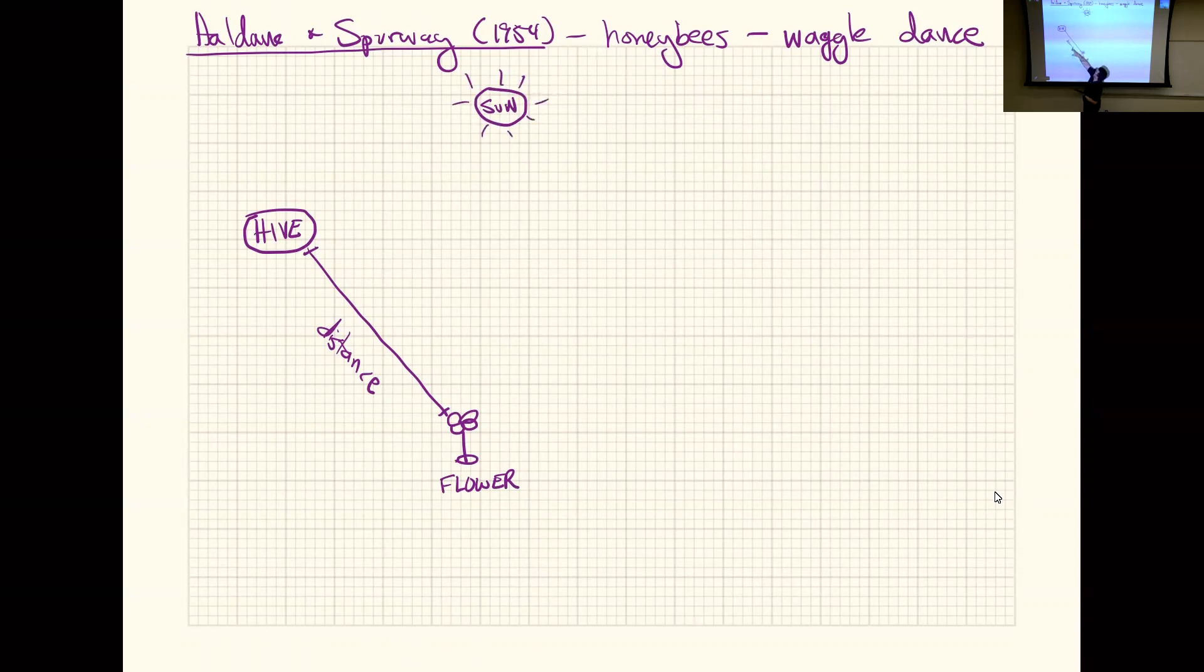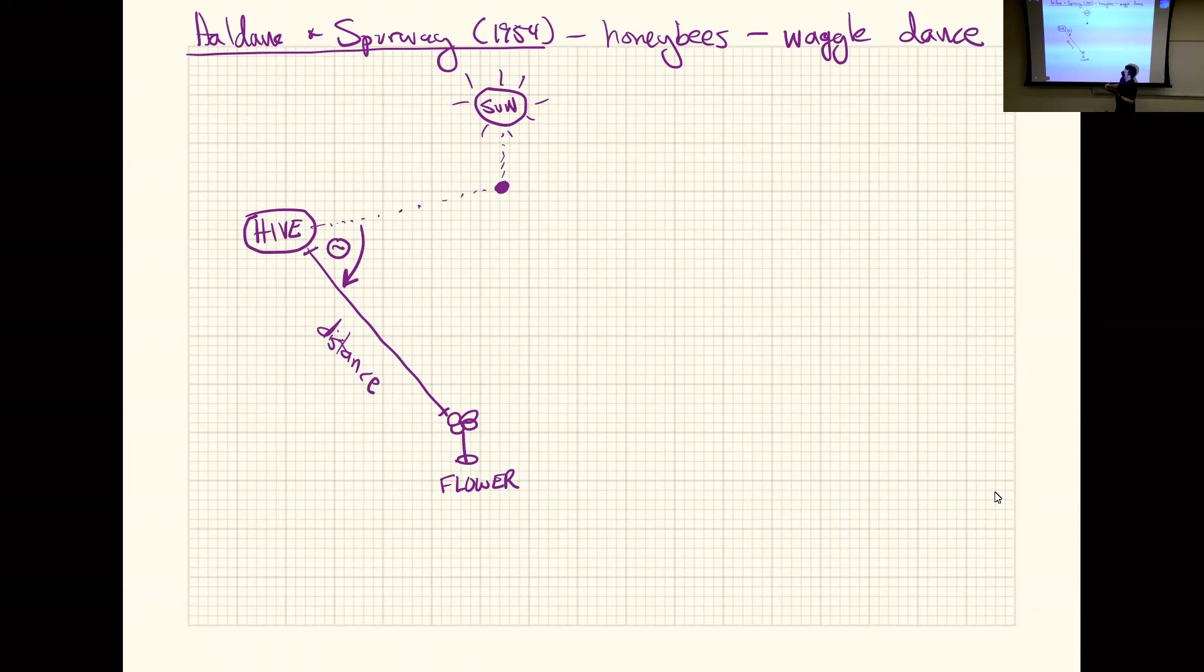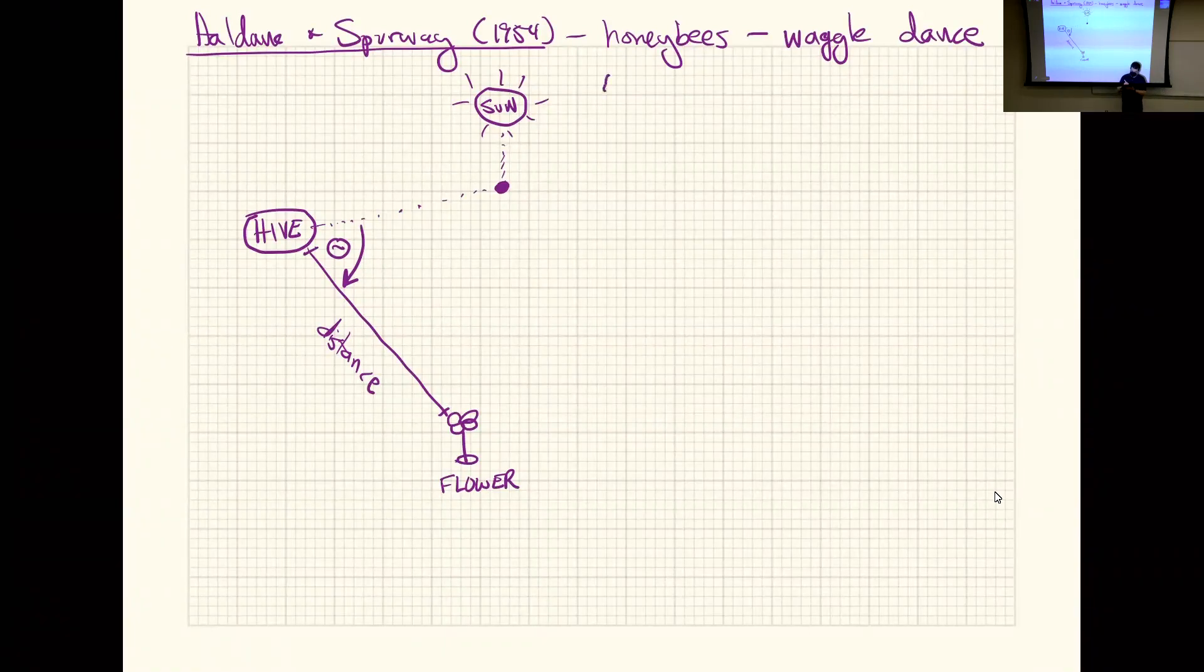What these honeybees do is they will use the sun. If you imagine the hive is somewhere down in the ground, the sun's up in the air. You can imagine that if you project the sun down to a point on the ground somewhere, then you can imagine there's an angle from the hive to the sun. You can take the angle between that direction wherever the sun is and where the flower is, and now you've got a polar coordinate for the flower.